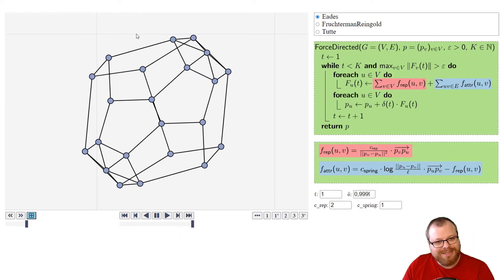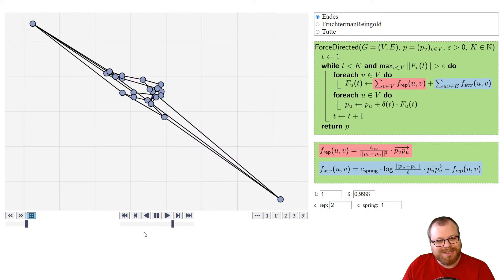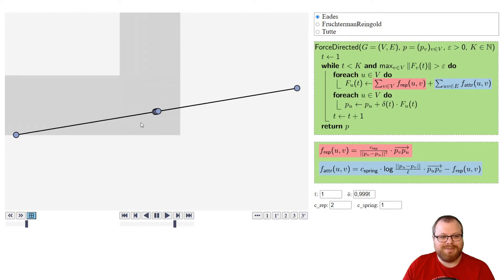Still, we were lucky here that we got a nice drawing in the end, but it could also have ended at something like this, and that's not something we want. So choosing good parameters here is very important for the algorithm, and that's something we have to take care of.